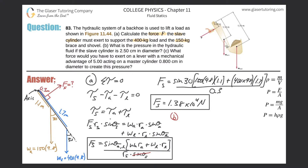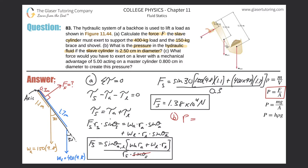Now Part B: what is the pressure in the hydraulic fluid if the slave cylinder is 2.5 centimeters in diameter? We're trying to find pressure. We're given the diameter, which lets us find the area, and we just calculated the force. So we use the formula: pressure equals force divided by area, which is F divided by π r².